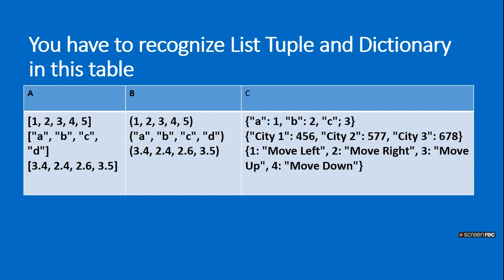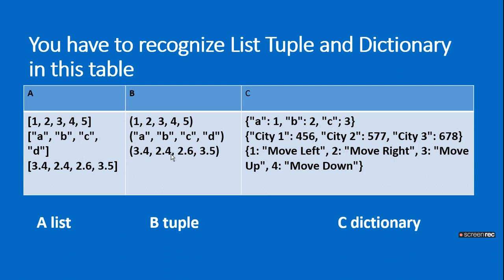The first one is a list, the second one is a tuple because it is in simple brackets. Then curly brackets are for dictionary and square brackets are for list.